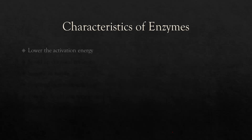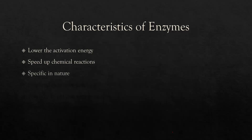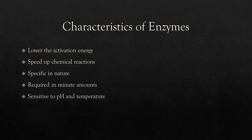What are the characteristics of an enzyme? They lower the activation energy and hence speed up chemical reactions. Enzymes are specific in nature — they have active sites that are complementary to the shape of their substrates. They are required in minute amounts; for example, you need just a little washing powder to wash a lot of clothes, and washing powder contains enzymes. Enzymes are sensitive to pH and temperature, which is the main difference between enzymes and inorganic catalysts. They also catalyze reversible reactions.